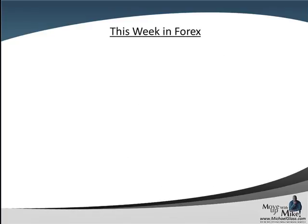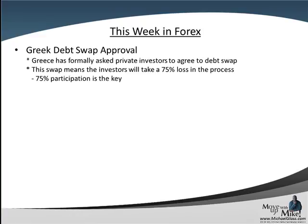Looking at this week in Forex and what to expect, we finally had the Greek debt swap approval — they got their money — and on Friday, Greece formally asked private investors to agree to this debt swap. This debt swap means they're going to take a 75% loss. The key here is 75% participation. If they get above 90% to 95% participation, everything is going to be fine and it's going to be considered voluntary. If they get 75% to 95%, then some of the swaps are going to come into play and it's going to be considered involuntary. If they get below 75% participation, then the whole swap is off.